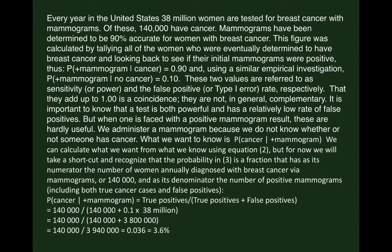Every year in the United States, 38 million women are tested for breast cancer with mammograms. Of these, 140,000 have cancer. Mammograms have been determined to be 90% accurate for women with breast cancer. This figure was calculated by tallying all of the women who were eventually determined to have breast cancer and looking back to see if their initial mammograms were positive. Thus, we have P(mammogram|cancer) = 0.90. And using a similar empirical investigation, and here empirical means using data rather than theoretical or hypothetical mathematical models, we found P(+mammogram|no cancer) = 0.10. That would be the false positive rate.